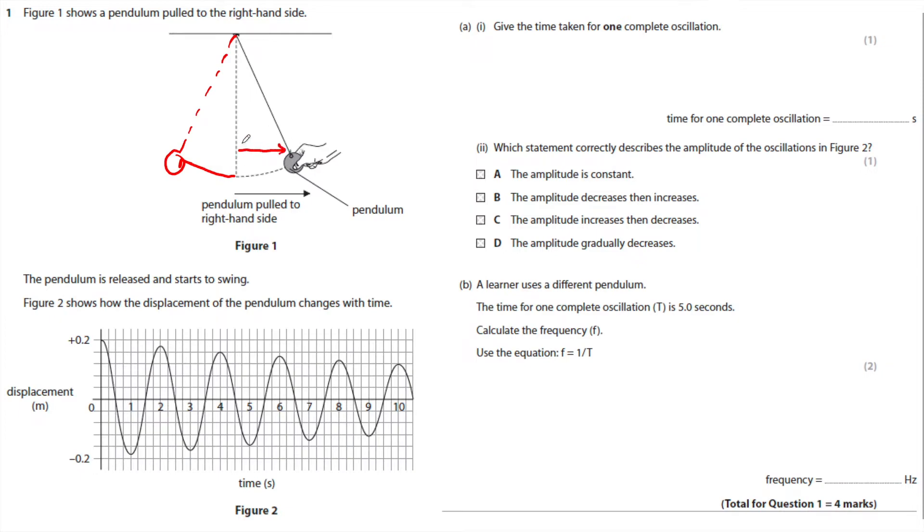The displacement is the distance from the mean position or the undisturbed position. So that will be your displacement. Give the time taken for one complete cycle. Well, if you have a look here, it starts at plus 0.2, zero is here, minus 0.2 is there. So then it goes back to 0 and back to where it started. So that is one complete cycle. And you can see that that is two, and be careful to check your units here. That's two seconds.